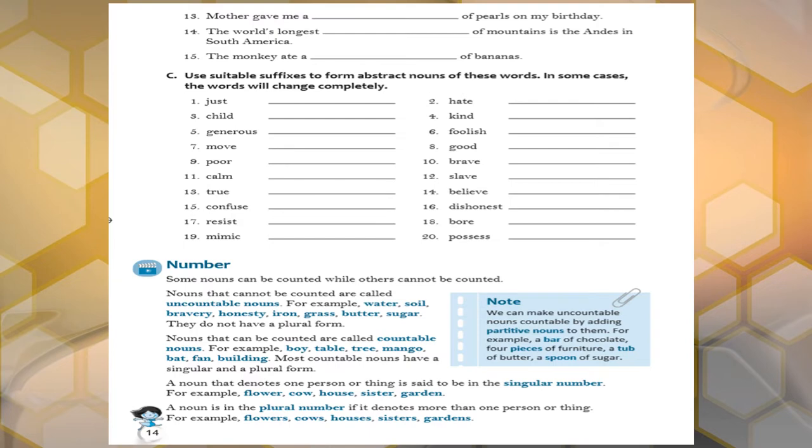Children, uncountable nouns: water, soil, bravery, honesty, iron, these are given. And countable are very clear to you. You can count down.